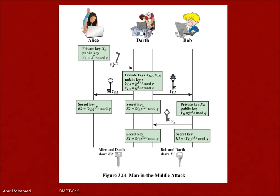However, Diffie-Hellman is extremely prone to active attacks or man-in-the-middle attacks. If Darth is in the middle and listens to the traffic, he can send a value YD to Alice and another YD to Bob to force them to generate keys on both sides. Darth will communicate to Alice as if he is Bob, and to Bob as if he is Alice, generating secret keys on both sides that he knows — and he will be able to break the communication.